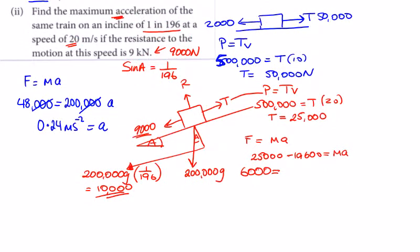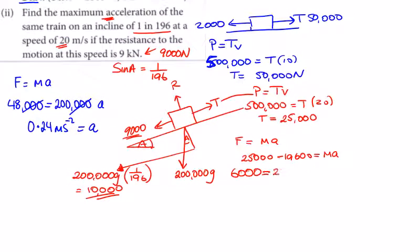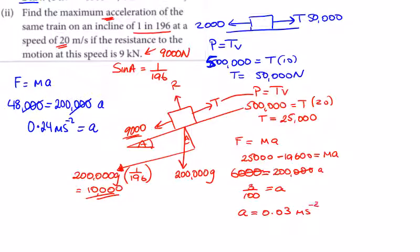So 6,000 equals 200,000 times a. Cancelling three zeros gives 6 over 200, which is 3 over 100. So a equals 0.03 m/s². Note: the total resistance was 19,000 newtons, not 19,600.